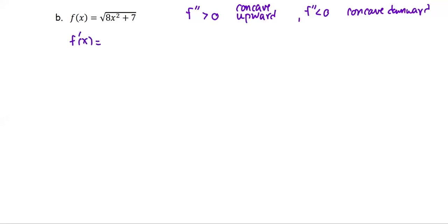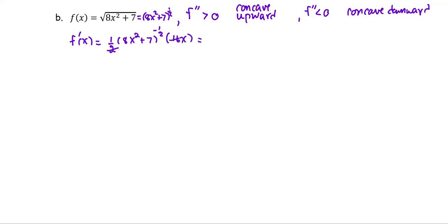Let's find the first derivative. This function can be rewritten in power form as 8x squared plus 7 to the power 1 half. So use the general power rule to get 1 half times 8x squared plus 7 to the power negative 1 half, multiplied by the derivative of 8x squared plus 7, which is 16x. Simplify a little bit more to be 8 times x over the quantity 8x squared plus 7 to the power 1 half.